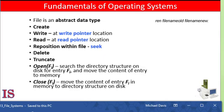Opening a file: rather than have all file operations specify a file name — causing the operating system to evaluate the name, check access permissions, and so on — all operations except create and delete require a file open first. If successful, the open call returns a file handle that is used as an argument to the other calls. To write a file, we make a system call specifying both the open file handle and the information to be written. The system must keep a write pointer to the location in the file where the next write is to take place if it is sequential, and the write pointer must be updated whenever a write occurs.